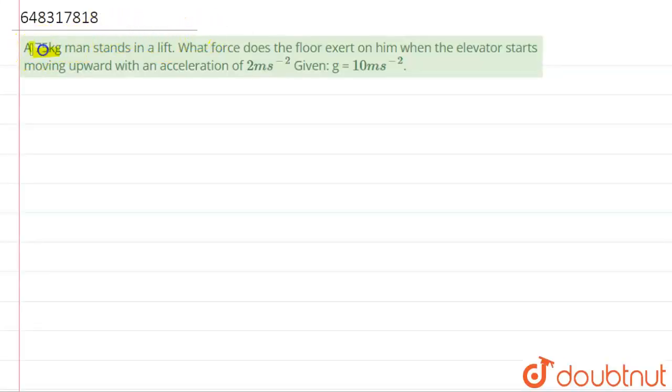Hello students, now we're going to see this question. The question says that a 75 kilogram man stands in a lift. What is the force does he exert on the floor when the elevator starts to move upwards with an acceleration of 2 meter per second squared?